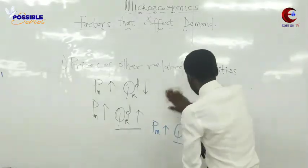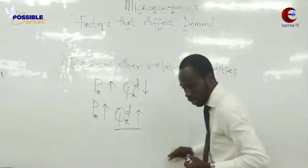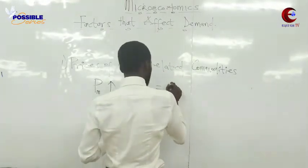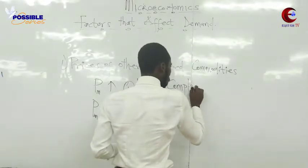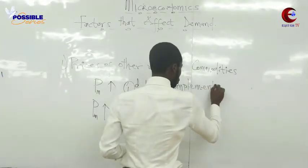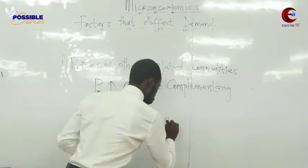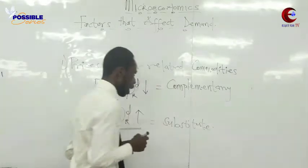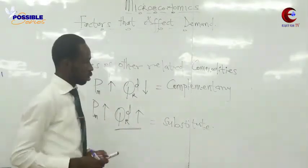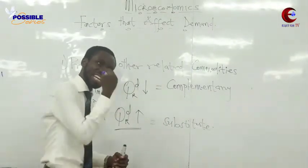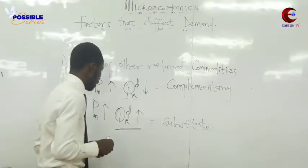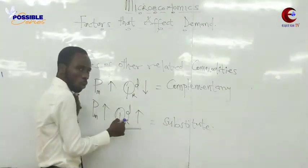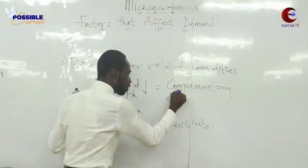So we can conclude: the first scenario — price up, quantity down — is a complementary good relationship, and the second scenario — price up, quantity up — is a substitute relationship. Look at the arrows: one going up and one coming down means they have a negative relationship. Put this at the back of your mind — it is very important.